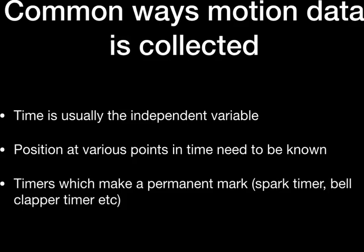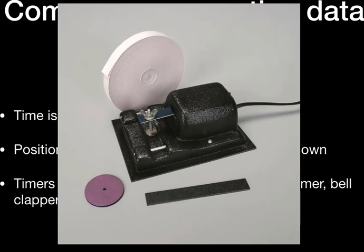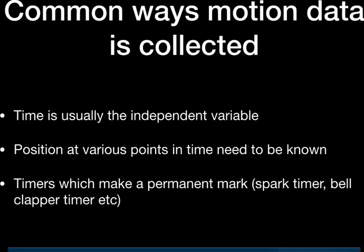One of the most common tools used in physics classrooms are spark timers or bell timers. Here's a picture of a common bell timer. It's got a little arm that sticks out, and when you turn it on, it claps up and down at a nice regular rate. You pull that tape through it, and it will leave marks on the tape at a nice interval. If attached to an object traveling at constant speed, the tape would show evenly spaced dots, indicating constant speed.